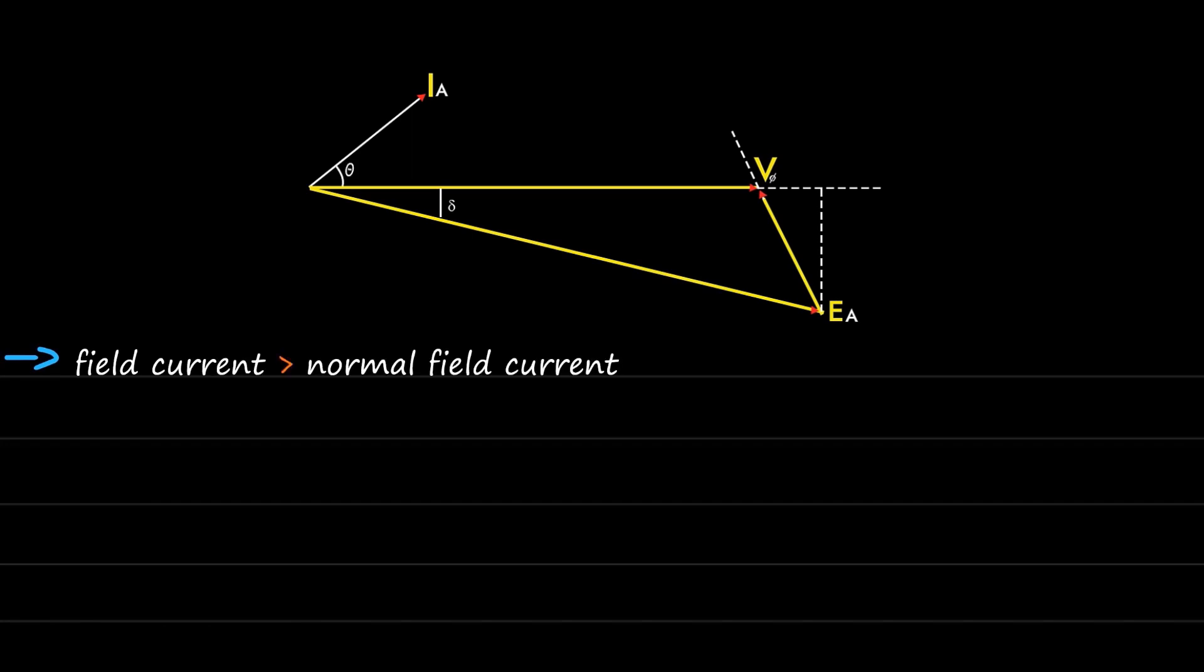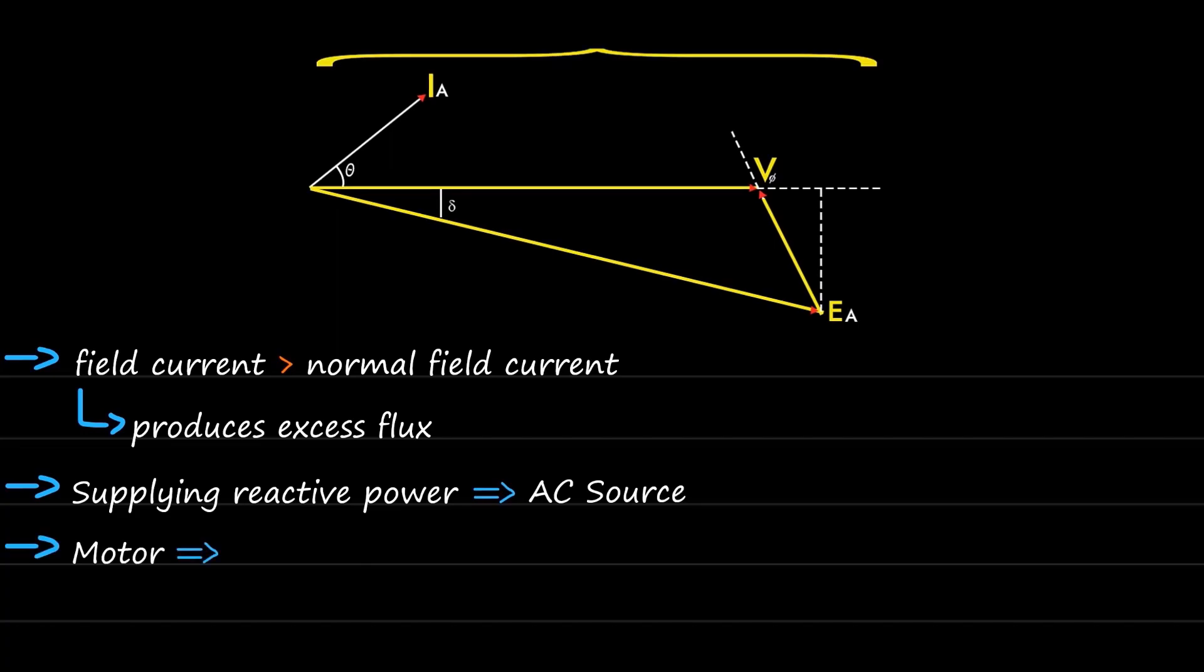If the field current is more than the normal field current, this excess amount of field current produces excess flux. This results in supplying reactive power to the AC source, and the motor in this case is said to be operating at leading power factor, and thus said to be overexcited.